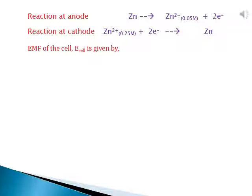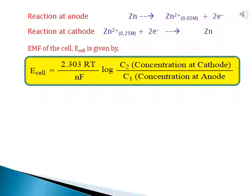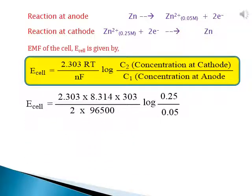Since the temperature is 303 kelvin, which is other than 298 kelvin, the appropriate equation used to find the EMF of the cell is: E_cell = (2.303RT / NF) × log(C2/C1), where C2 is the concentration of Zn²⁺ at cathode and C1 is the concentration of Zn²⁺ at anode.